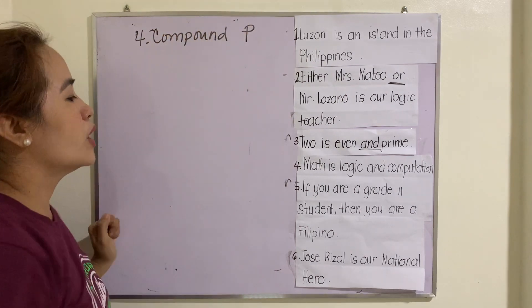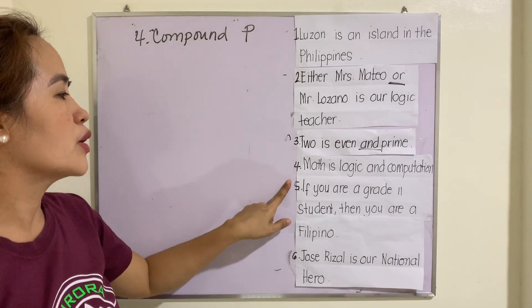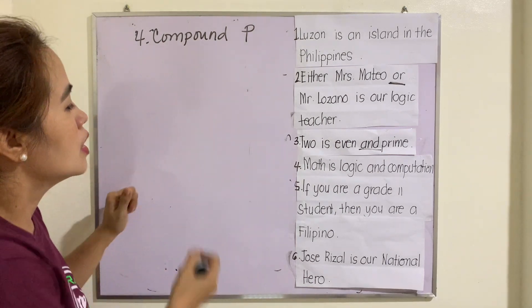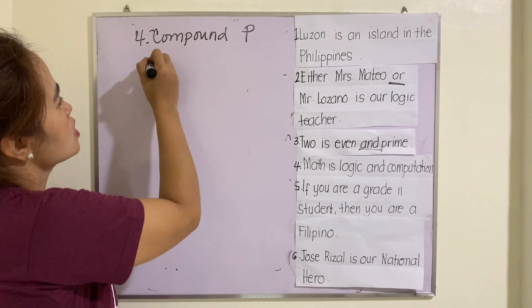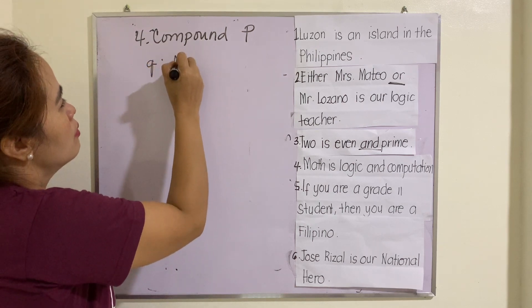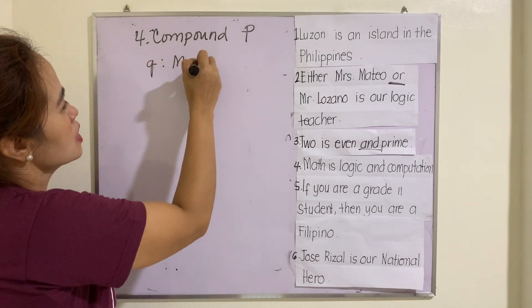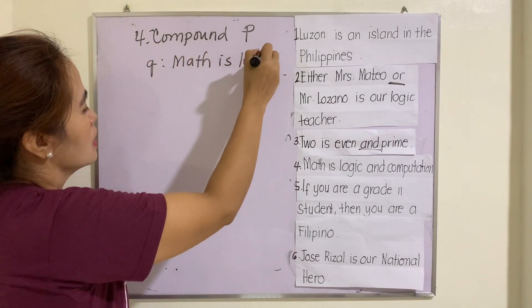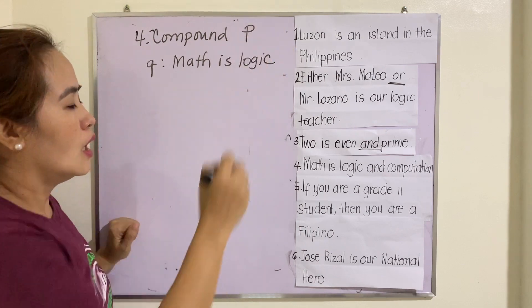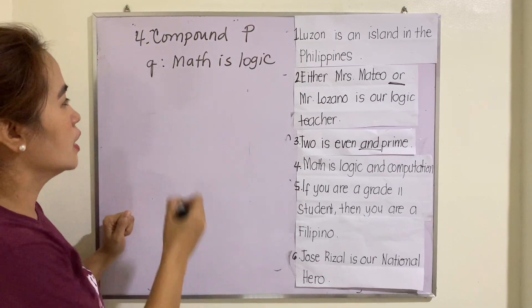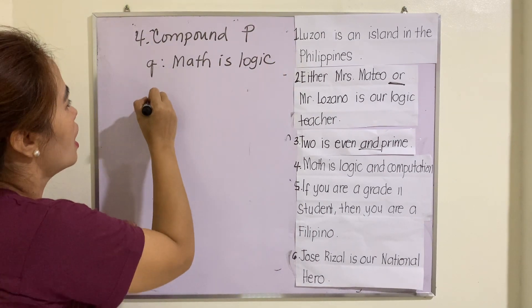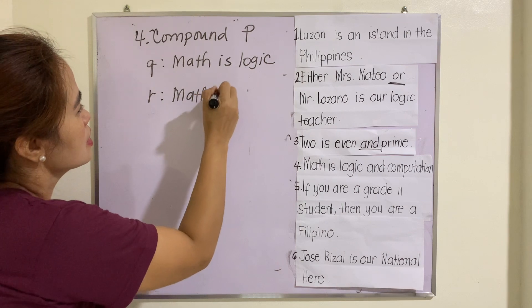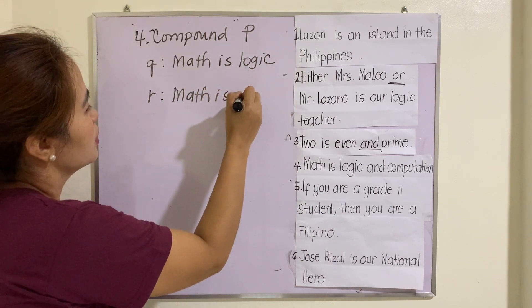The two propositional variables for number four are: q - 'Math is logic', and r - 'Math is computation.'